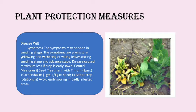The first disease is wilt. The symptoms include premature yellowing and withering of leaves during the seedling stage and advanced stage. Control measures include seed treatment with thiram at 2 grams plus carbendazim at 1 gram per kg of seed. Also adopt crop rotation and avoid early sowing in badly infested areas to minimize the disease.